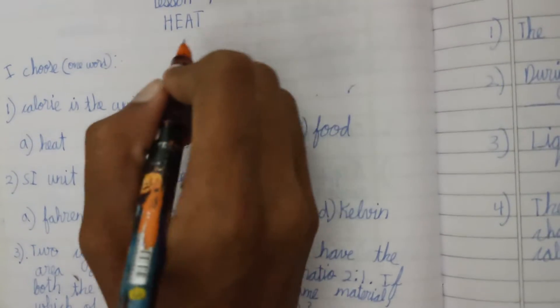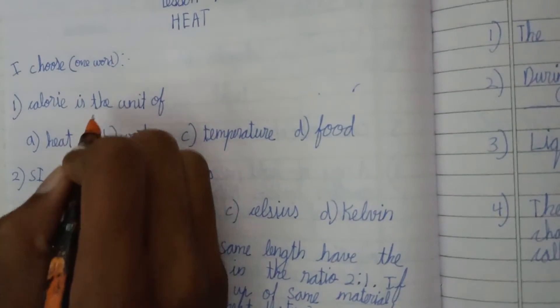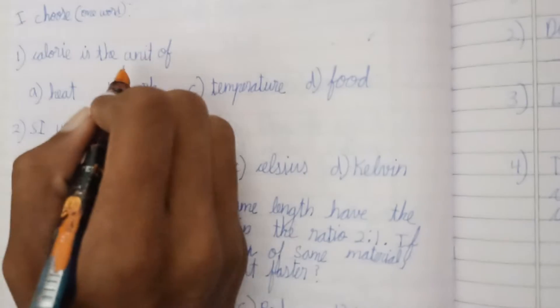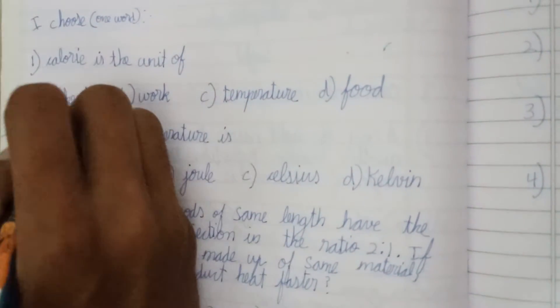If I am a lesson 7 like heat, one word bakalan choose. First question, calorie is the unit of heat.